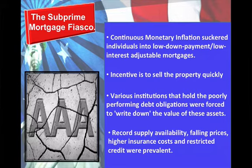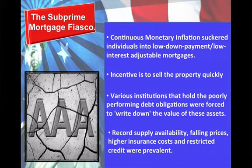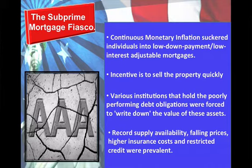This is related to the subprime mortgage fiasco. During the housing bubble, there was continual monetary inflation, which sucked individuals who couldn't afford homes into low down payments and low interest adjustable mortgages, and then they couldn't pay for them. The incentive to get involved with the housing market was to sell the property quickly and buy it cheap. But various institutions holding the poorly performing debt obligations were forced to write down the value of those assets, leading to falling prices, higher insurance costs, and restricted credit.